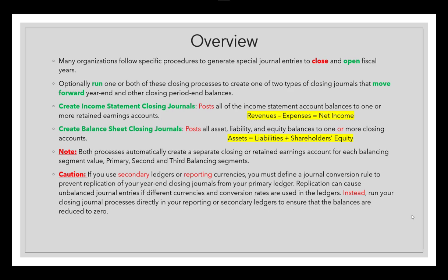If you're using a secondary or reporting currency, you must define a journal conversion rule to prevent replication of year-end closing journals from your primary ledger. Replication can cause unbalanced journal entries if different currencies and conversion rates are used in the ledgers. Instead, you can run these closing journal processes separately in your reporting or secondary ledger to ensure that the balances are reduced to zero.